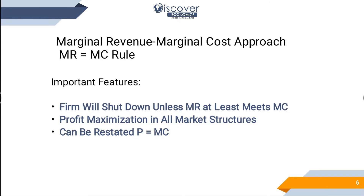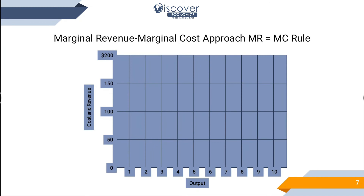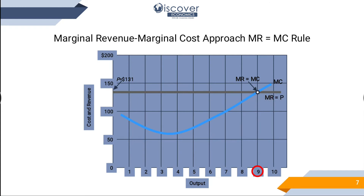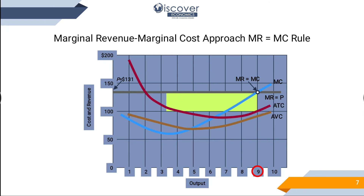If you ask what profit maximization is, let me tell you. We have quantities on one axis and prices on the other. P equals AR equals MR — this line you have to draw. Then you will draw the marginal cost line. You will also see the average variable cost line. Then you have to draw the average total cost, and this area represents your profit.